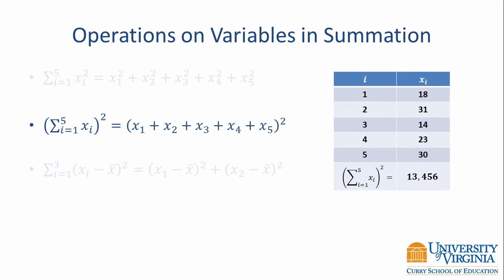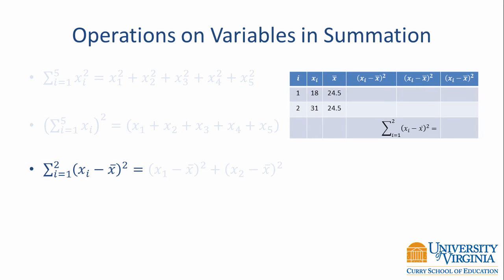Next is an example that uses both parentheses and exponents. We have the sum from i equals 1 to 2 of the quantity x sub i minus x-bar, squared. That expands to x sub 1 minus x-bar quantity squared, plus x sub 2 minus x-bar quantity squared. Because of the order of operations, we first do the operation within the parentheses, then handle the exponent, then do the sum. For this data example, we take 18 minus 24.5 to get negative 6.5, square that to get 42.25, then take 31 minus 24.5 and square it to get 42.25. Adding those values together, we end up with 84.5.